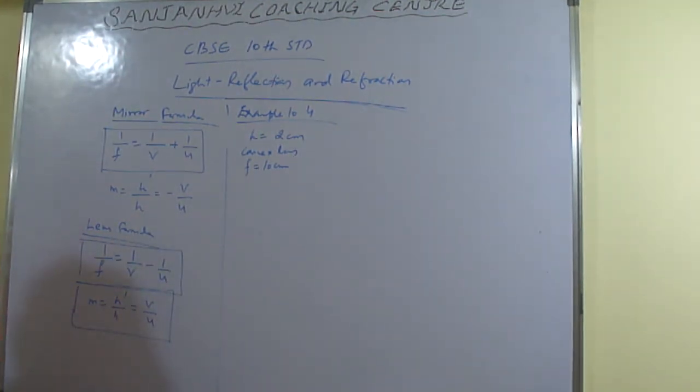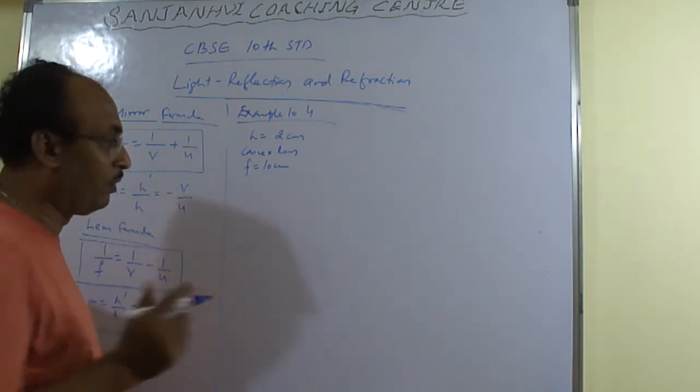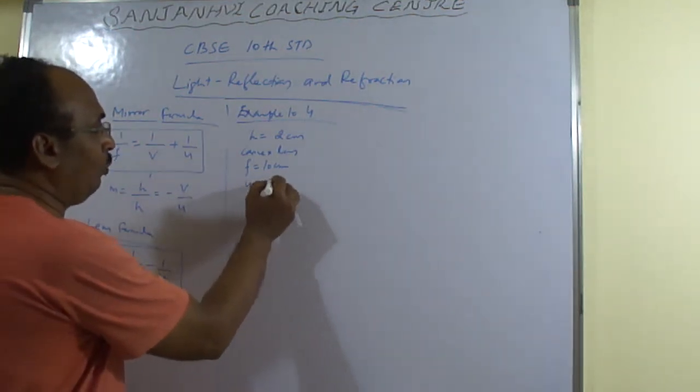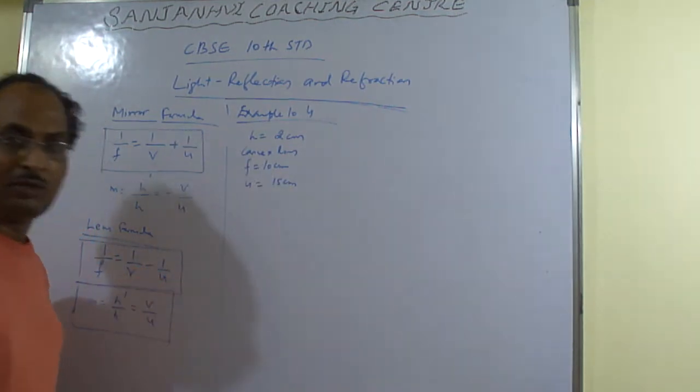Now the distance of the object from the lens is 15 cm. Distance of the object from the lens. So u is given to us as 15 cm.